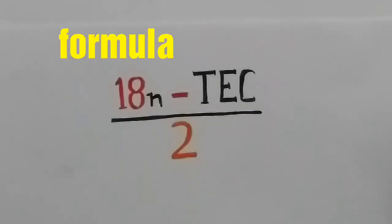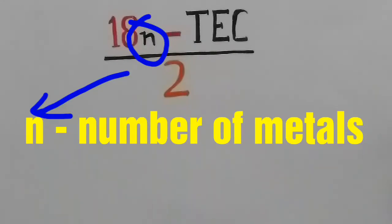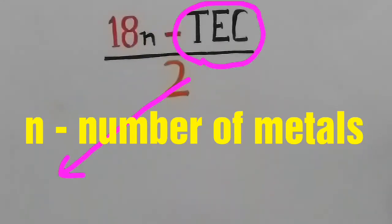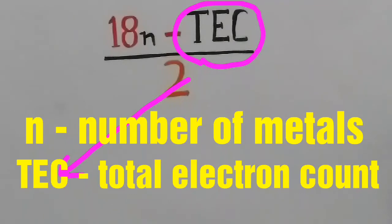This is the formula to calculate the bond order for metals. N is the number of metal. TEC is the total electron count.